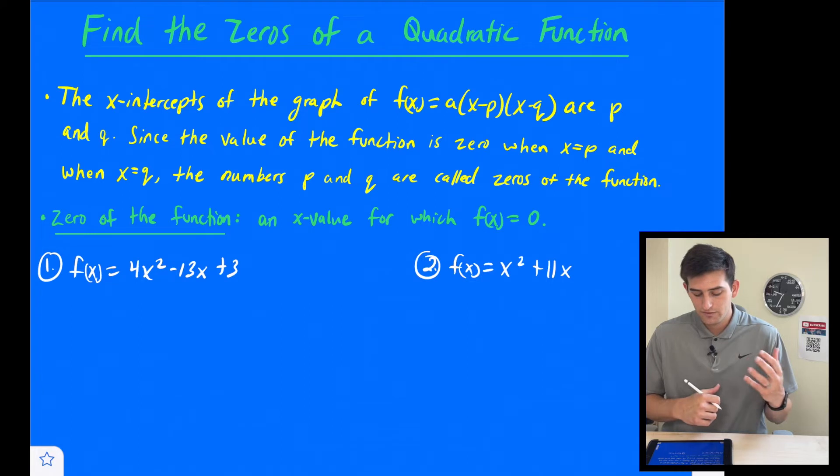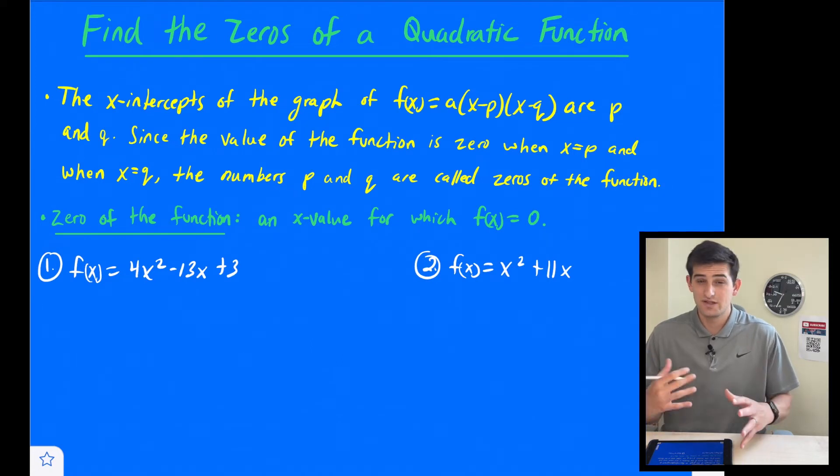So since the value of the function is zero when x = p and x = q, we call those numbers p and q the zeros of the function. So essentially, it is what is x when y is equal to zero?